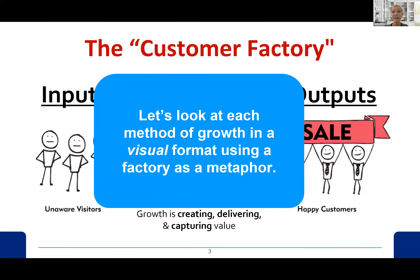Now we want to take a look at our customer factory. This is part of the optional reading. It is an abbreviated version of a business model, similar to the business model canvas, but a very focused portion of it that relates specifically to customers.